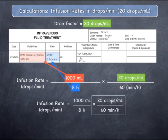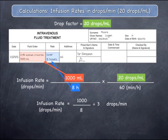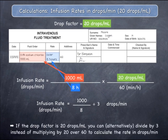If you consider the second fraction, 20 over 60 will cancel to 1 over 3. The units of mils will cancel, and so will the units of hours. Multiplying by 1 over 3 is the same as dividing by 3. This means that if the drop factor is 20 drops per mil, you can divide by 3 instead of multiplying by 20 over 60.